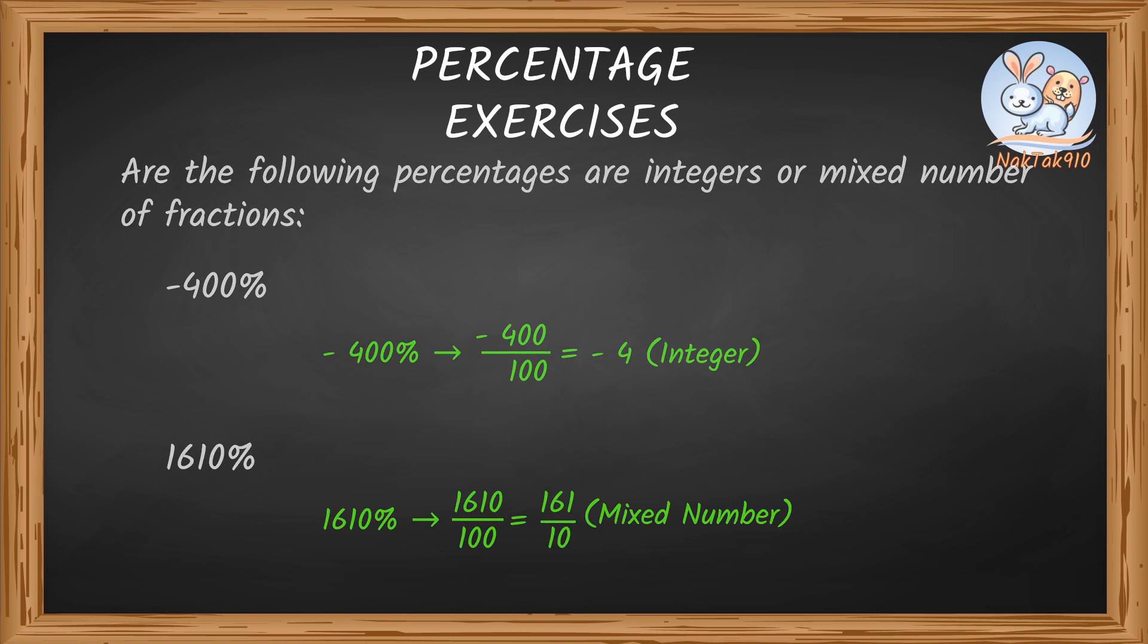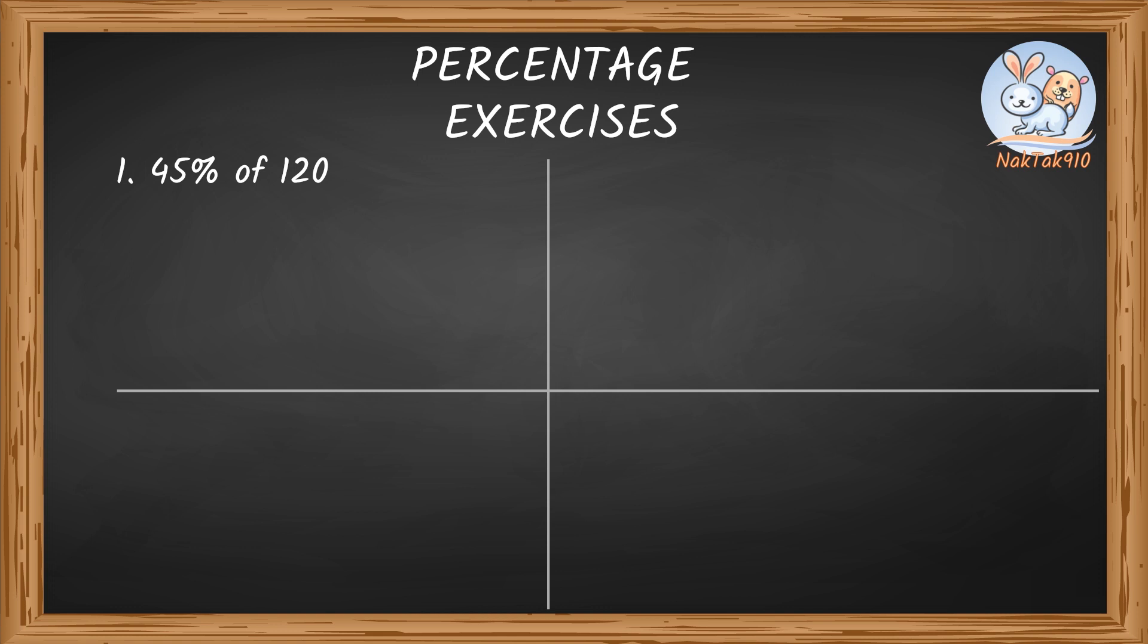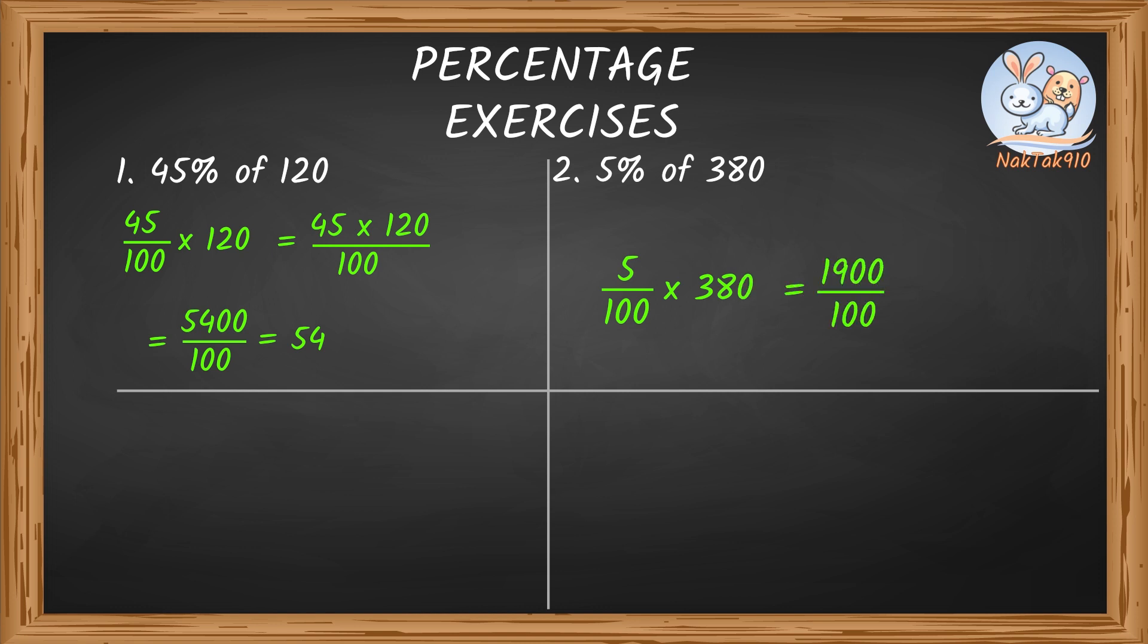Let's solve some examples together. 45% of 120. Let me solve this one. 45% can be written as 45 by 100. And we learned of means multiplication. So 45% of 120 can be written as 45 by 100 times 120. 45 times 120 gives us 5,400. Divided by 100 is 54. Next, let's solve 5% of 380. 5% of 380 can be written as 5 by 100 times 380, which is 1,900 by 100, which gives us 19. So 5% of 380 equals 19.